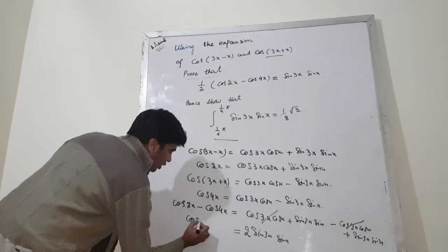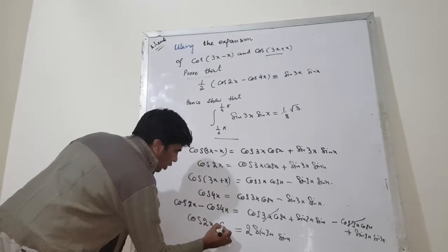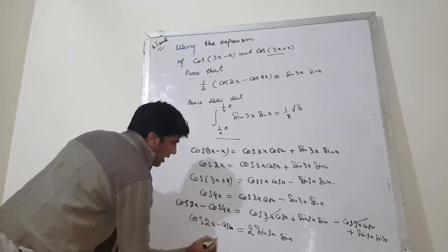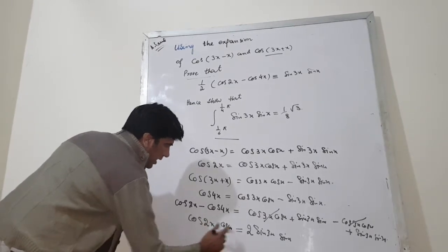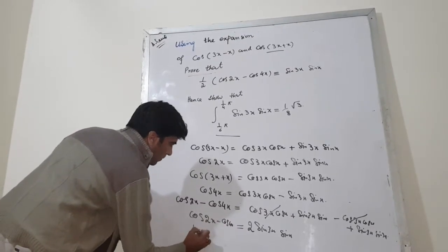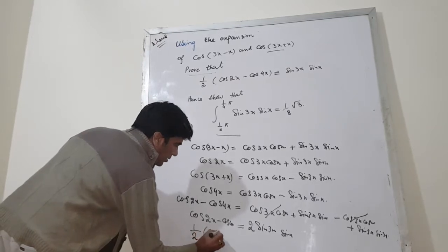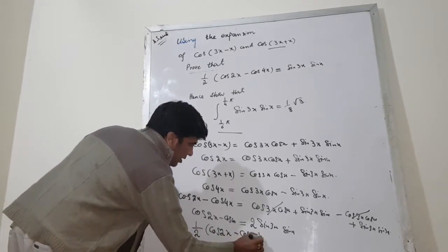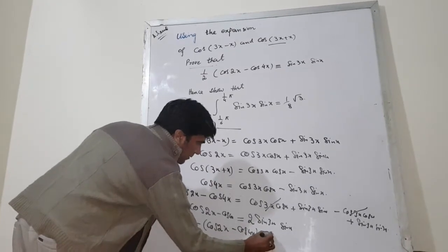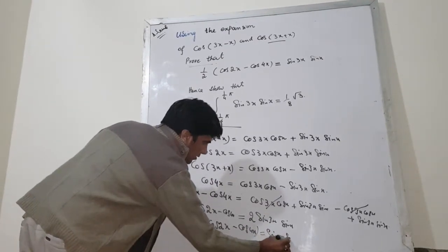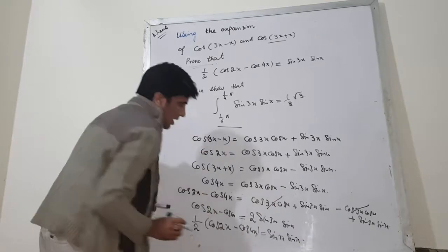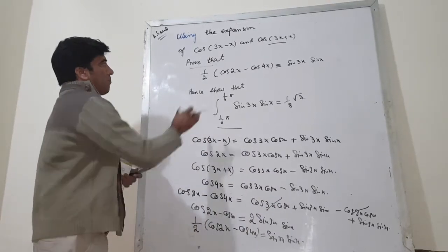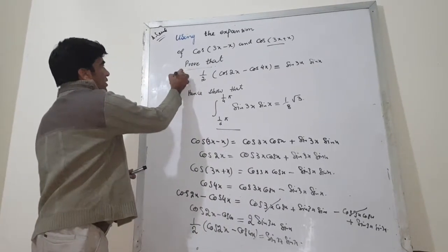So, you can say that cos 2x minus cos 4x and take 2 to the other side, you will get 1 over 2, cos 2x minus cos 4x is equal to sin 3x sin x. So, this way, we proved the first part of this question.